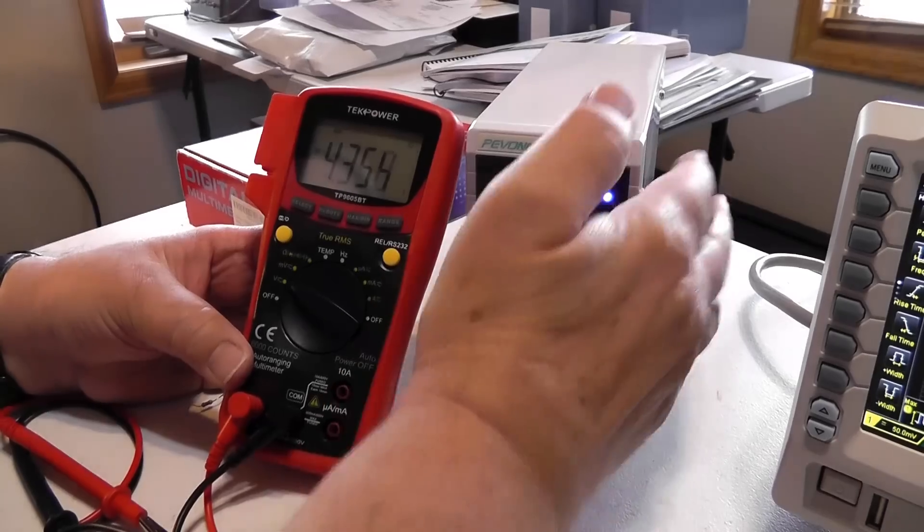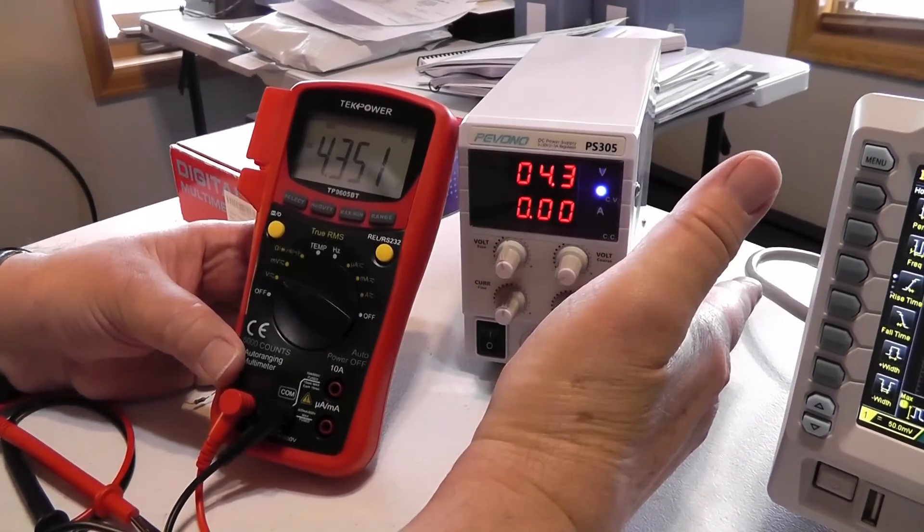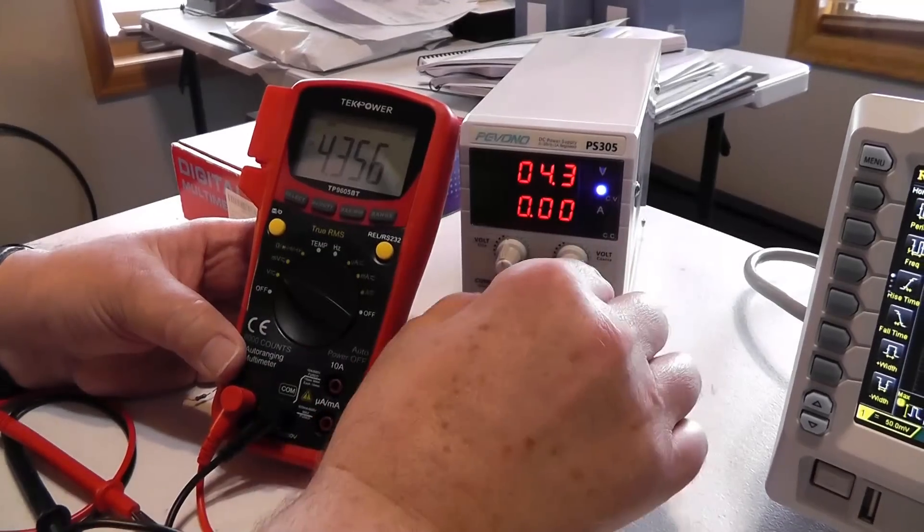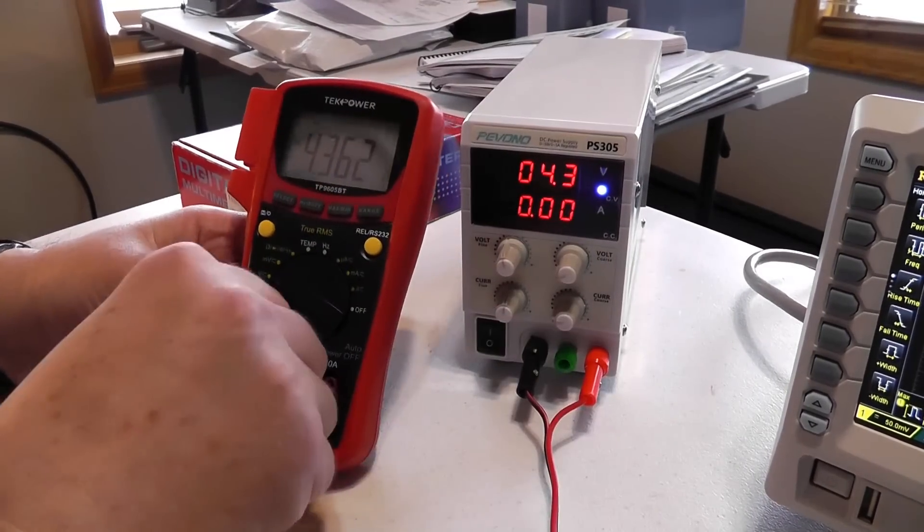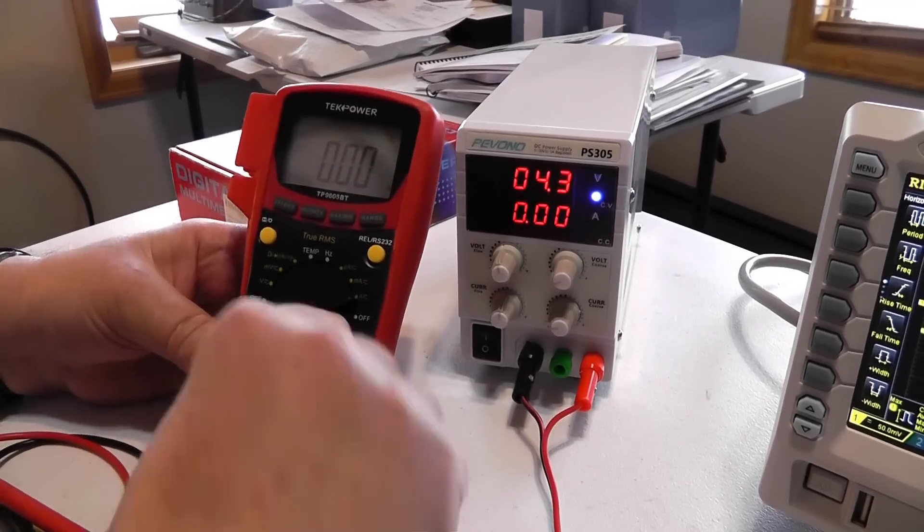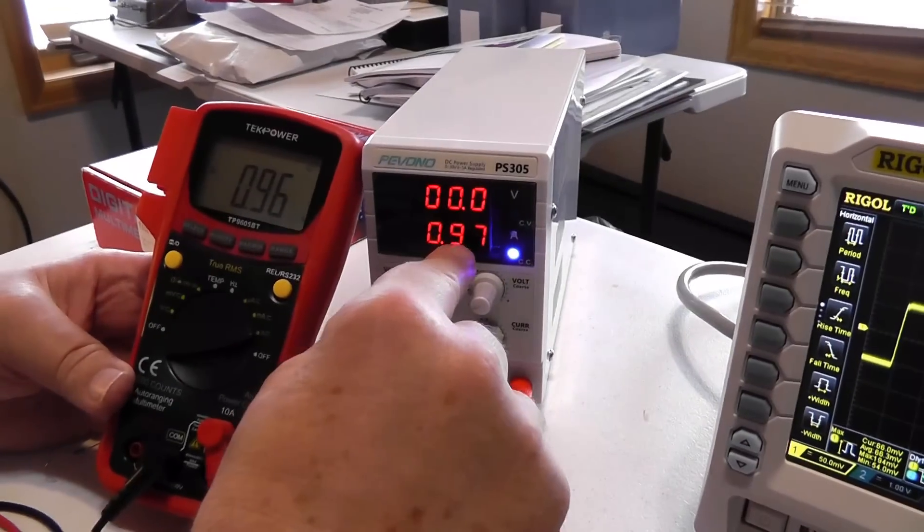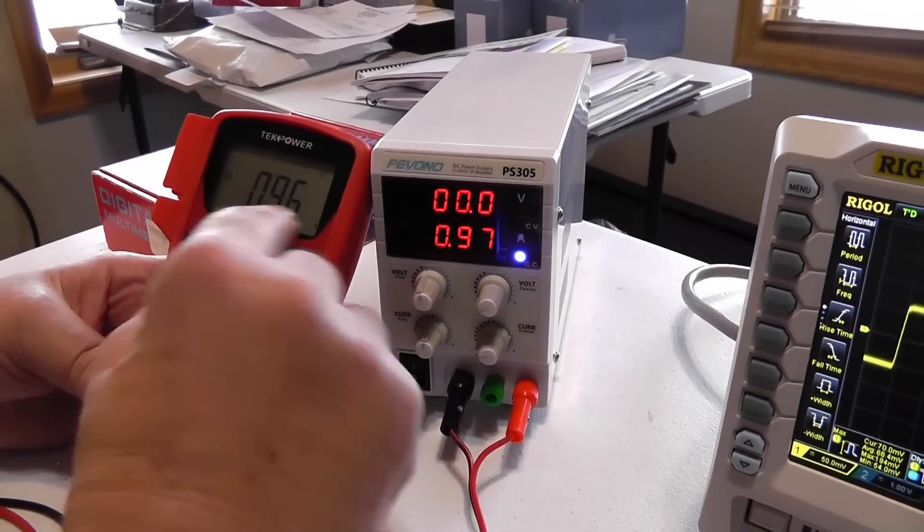Now something else about this is this puts out voltage. That's what you would think a power supply does. But this one also can control the current. I'm going to switch this over to the 10 amp circuit. Okay, and now we're measuring current. This is in amps right here.